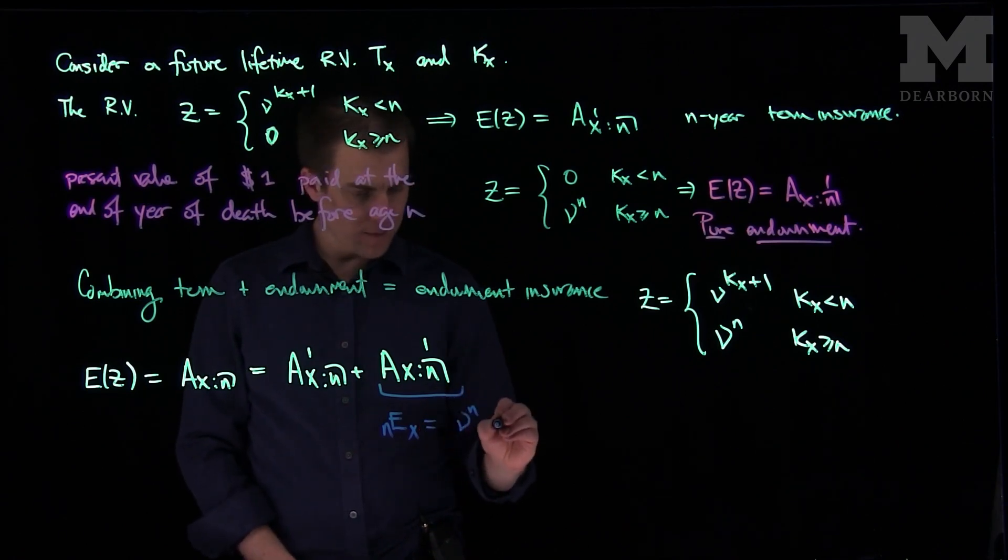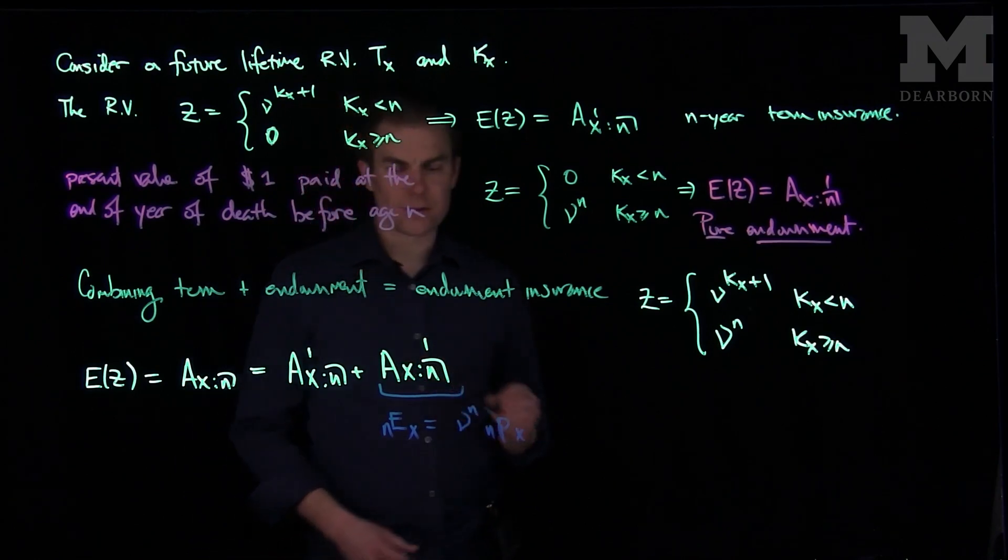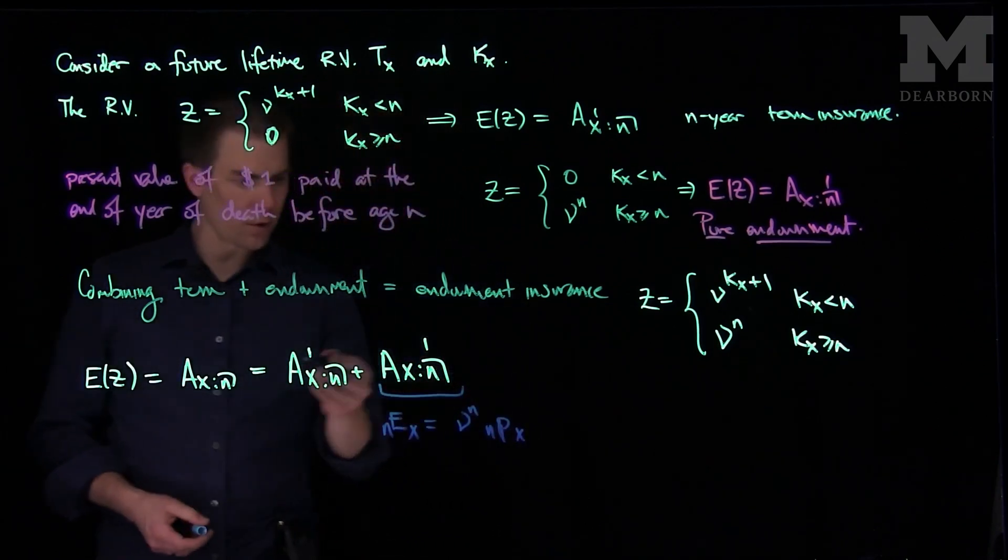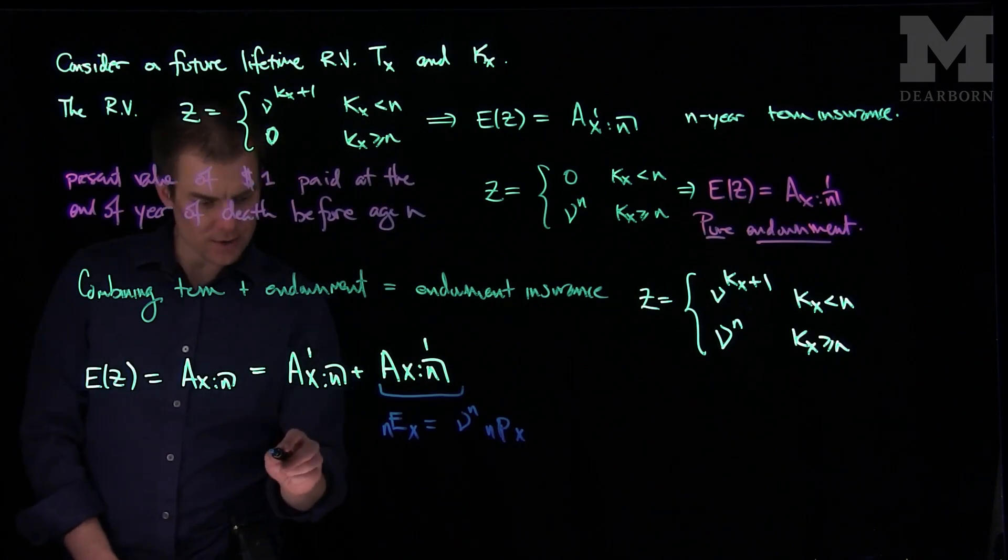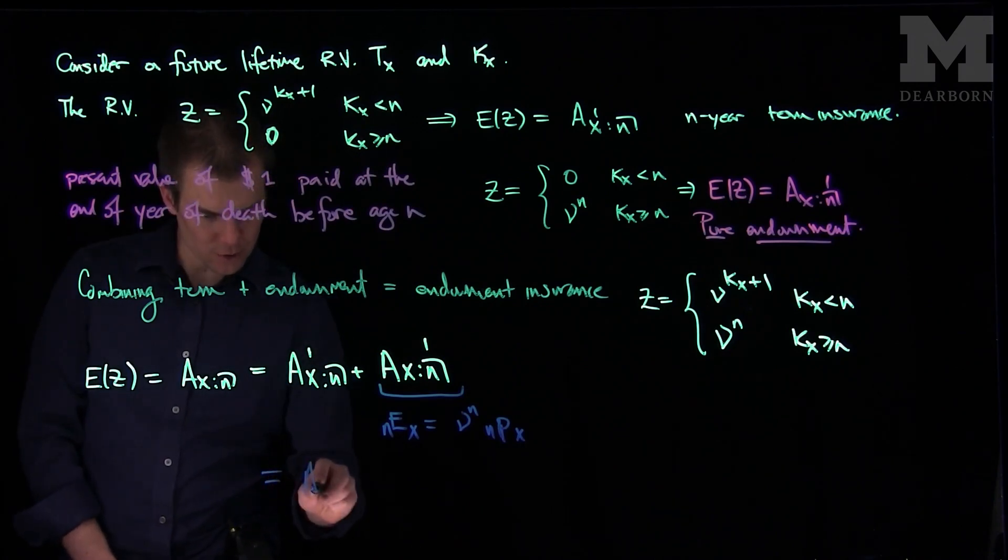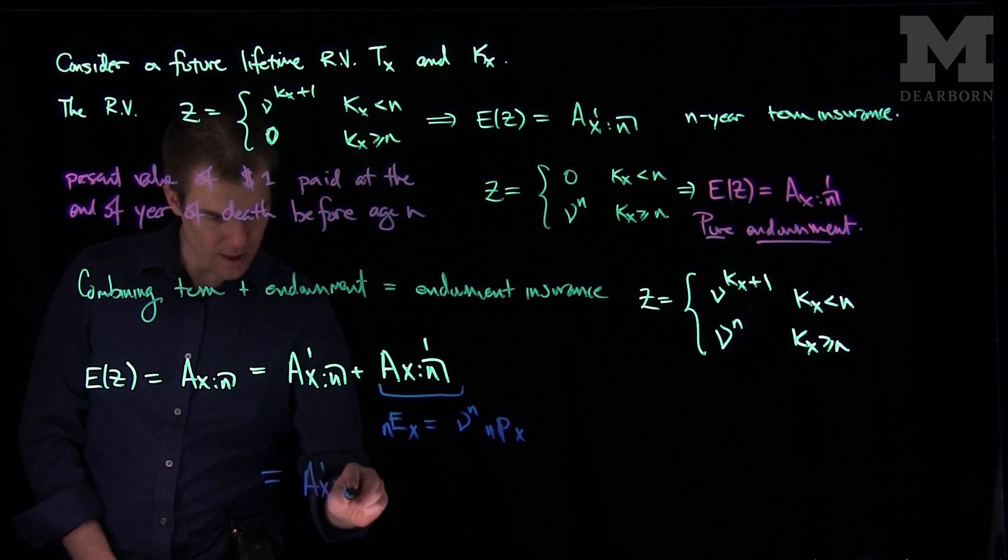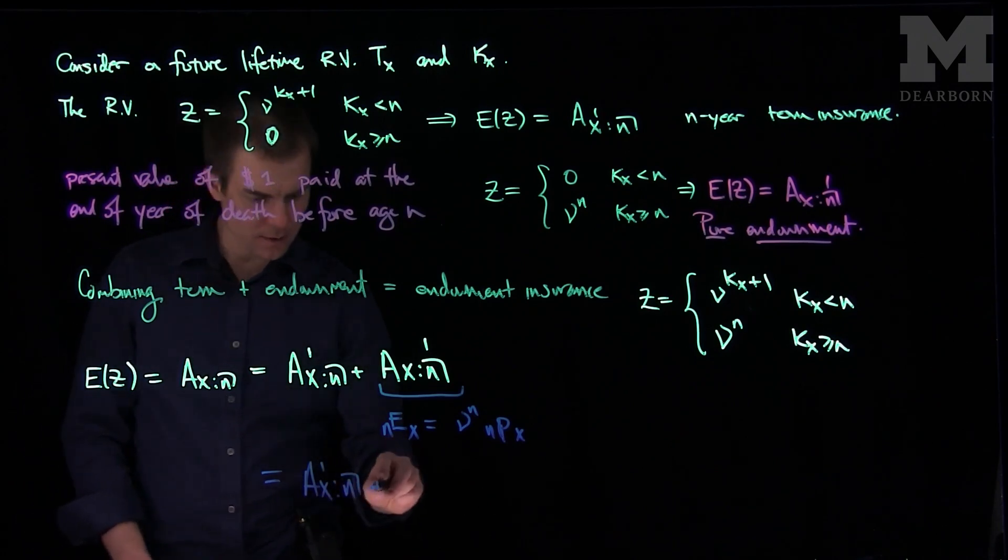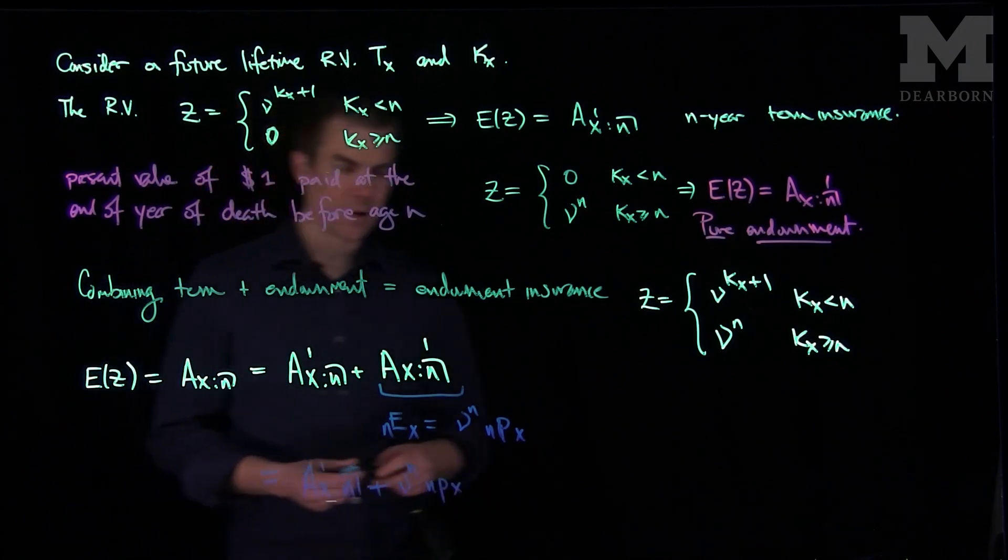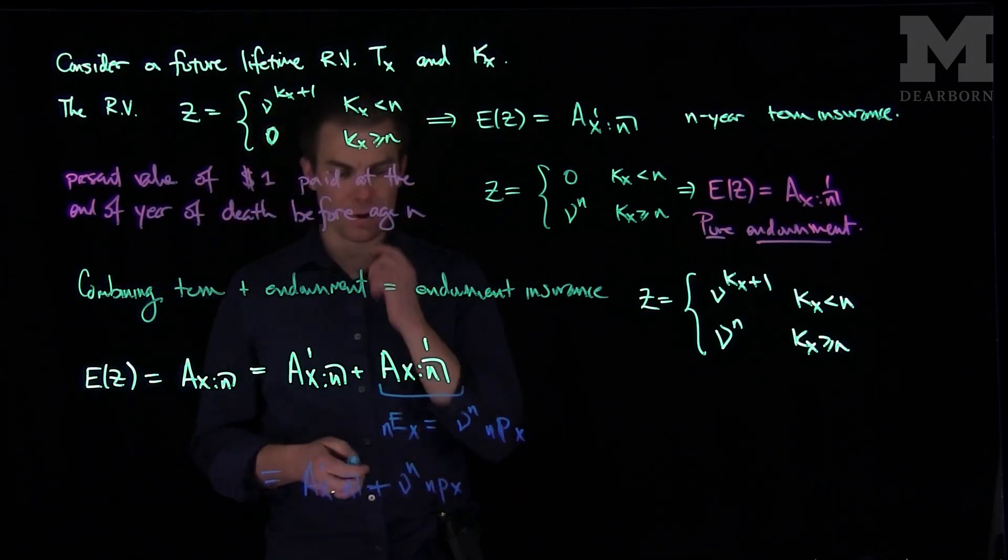is ν to the power n times n px, the probability that x survives to age n. Oftentimes we'll avoid this notation entirely and just say this endowment insurance is equal to term insurance Ax:n with a 1 on top, plus one dollar payment ν to the n, provided that the person age x survives to time n. So this is a pure endowment insurance.